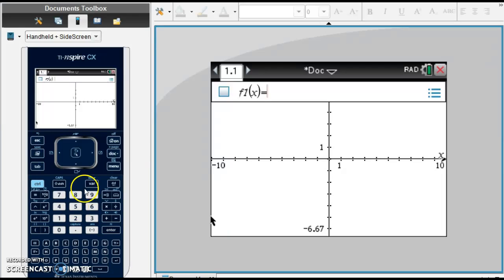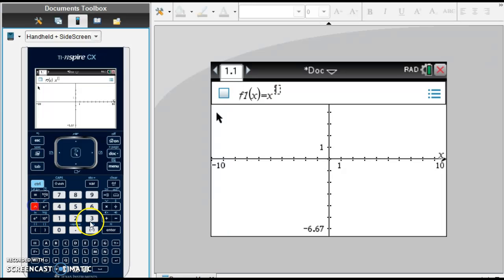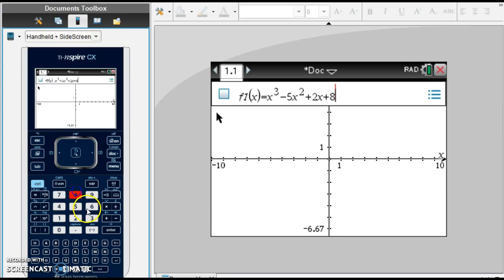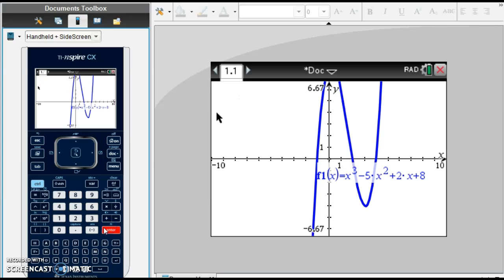We're going to type our function right here, so let's type x to the third minus 5x squared plus 2x plus 8. And let's hit enter and see what that looks like.